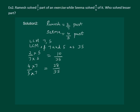Clearly, 10 by 35 is less than 28 by 35. This means 2 by 7 is less than 4 by 5. And hence, we can say that Ramesh solved lesser part of the question.